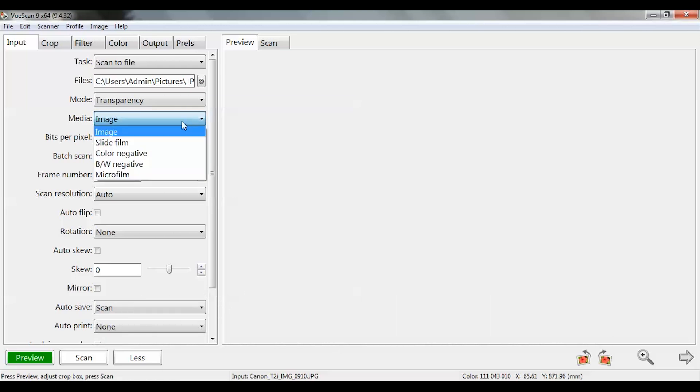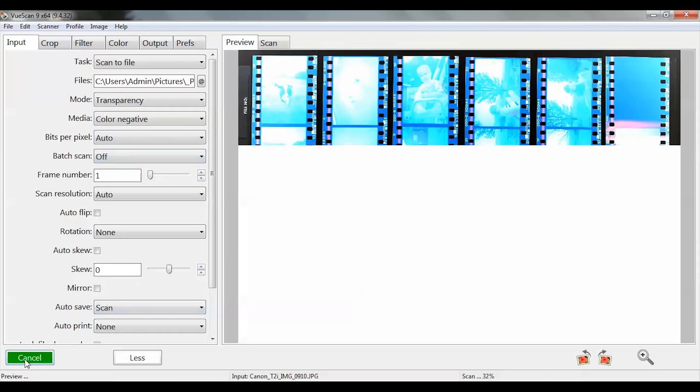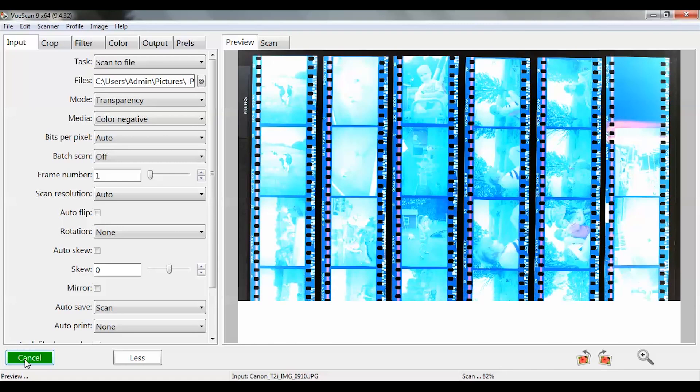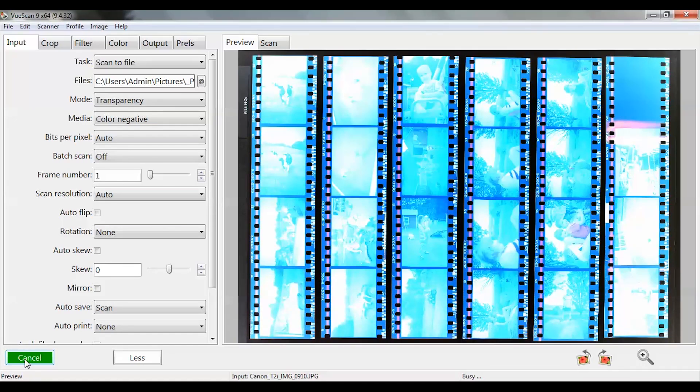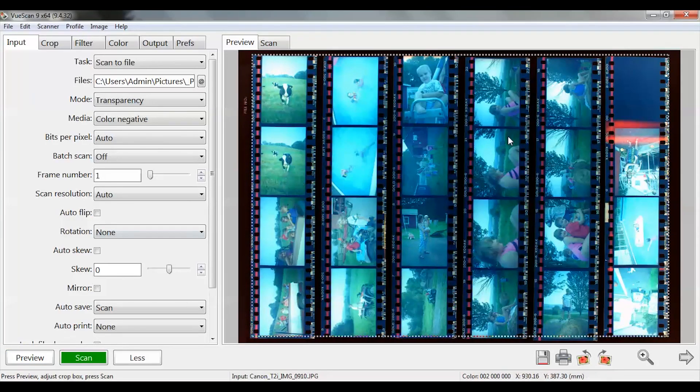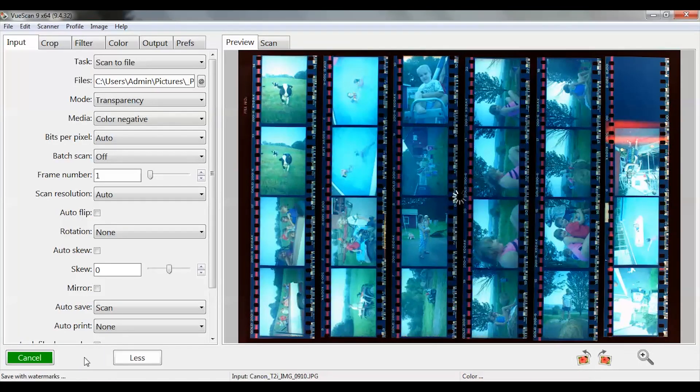Then you'll select preview and it actually pulls in the file and it converts it from a negative to a positive. And since I've already cropped it the way I wanted, then it will give the proper boundary and it looks like a fairly decent positive. And I'm going to go ahead and scan it and it will store the file in the designated location that I've set in the output folder.